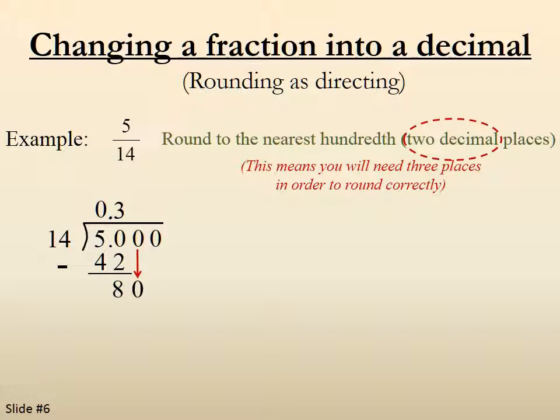How many times does 14 go into 80? It goes in 5 times. 5 times 14 is 70. I subtract. I get a 10. I bring down the next zero.